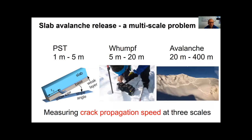When it comes to the speed of crack propagation, the most reliable reported speeds are based on the propagation saw test, the PST. In the last decade, this test has become a standard fracture mechanical test to investigate crack propagation in weak snowpack layers. But compared to an avalanche, there are some differences: the PST is small, and even large ones are just a couple of meters, and the PST is rather one-dimensional.